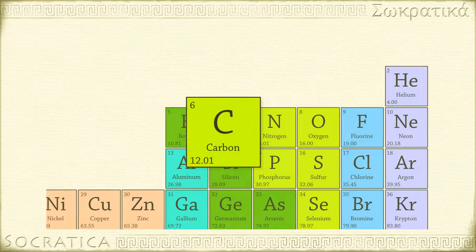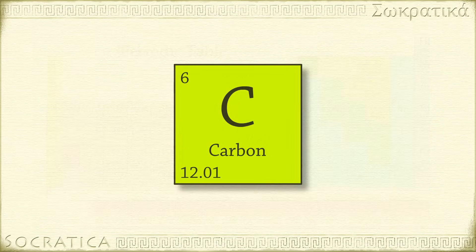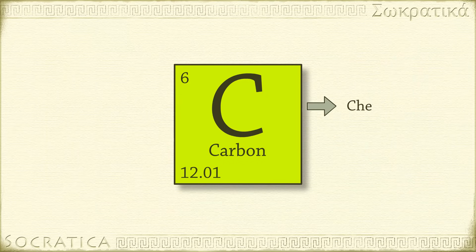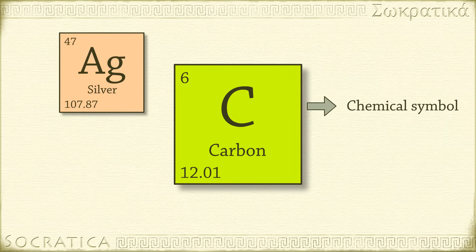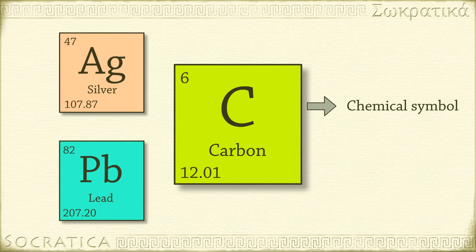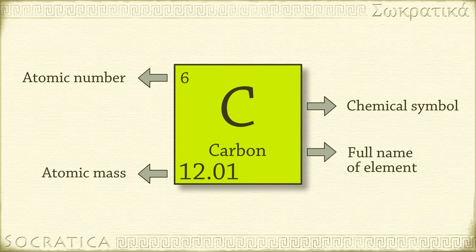Each element is represented by one square on the periodic table, with a one- or two-letter chemical symbol. Many of the chemical symbols are derived from the English name for the element, but some come from other languages. For example, the symbol for silver is Ag, from the Latin word argentum. The symbol for lead is Pb, from the Latin word plumbum. Above the chemical symbol is the atomic number of the element, and below the symbol are the full name of the element and its atomic mass.